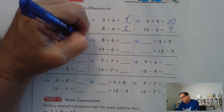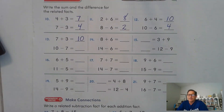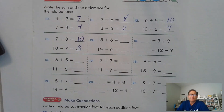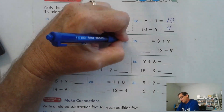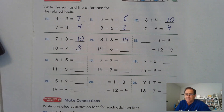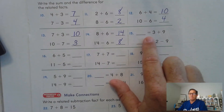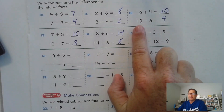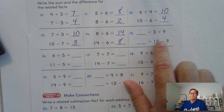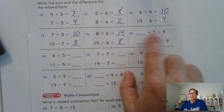Seven plus three is 10. Ten minus seven — think to yourself, seven plus what is 10? Three. Eight plus six: six plus six is 12, and eight is two more than six, so six plus six is 12 plus two more is 14. 14 take away six: six plus what will give me a sum of 14? Six plus eight. Now, don't get confused — whatever's on the left-hand side of the equal sign has to equal what's on the right-hand side. So we won't always see eight plus six equals; it's the same idea.